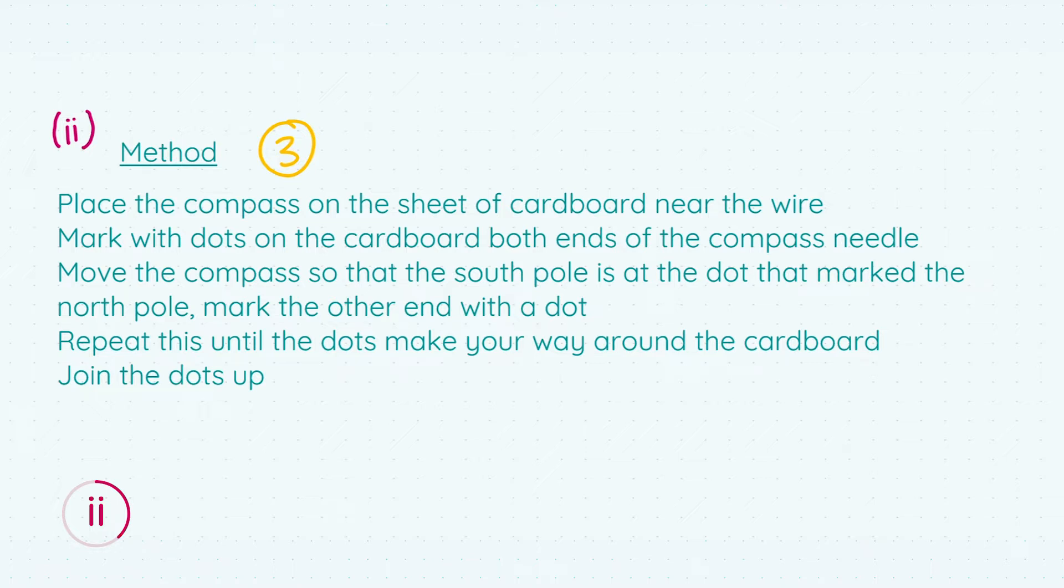You have to place the compass on the sheet of cardboard near the wire. You mark with dots on the cardboard both ends of the compass needle. Both ends, very important. Then you move the compass so that the south pole is at the dot that is marked by the north pole, and you mark the other end with a dot. You repeat this until the dots make your way around the cardboard and you finally join the dots up. Something similar to that. You can put your own spin on it like I've done here. Just walk them through the experiment and that will get you your three marks.